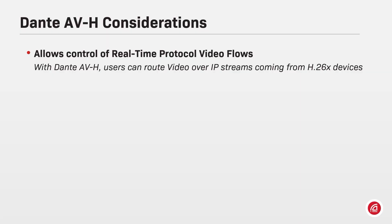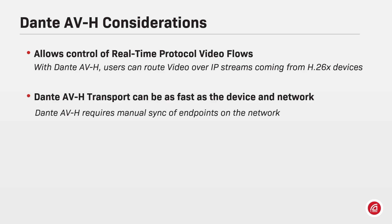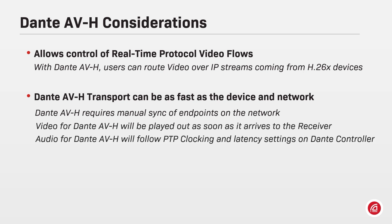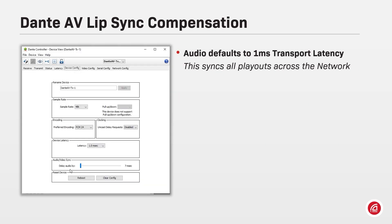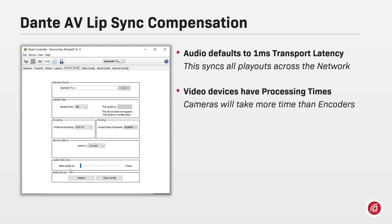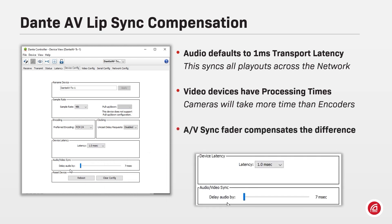Dante AVH allows control of real-time protocol (RTP) video flows coming out of H.264 or H.265 devices, meaning Dante AVH devices allow control of RTP packets through Dante Controller. As video and audio will be running different protocols — video on RTP and audio on Dante — lip sync will need to be done manually. Audio packets follow the same latency settings as all other Dante devices, defaulting to one millisecond transport latency, while video packets may be played out as soon as they arrive. Therefore, an audio delay compensation fader is provided to achieve perfect lip sync.